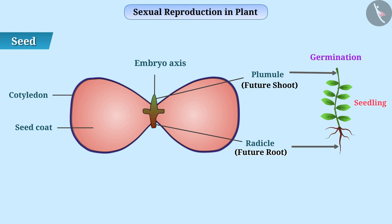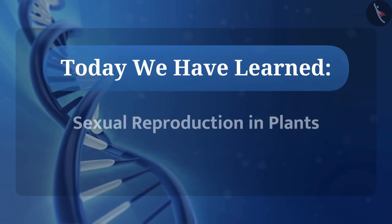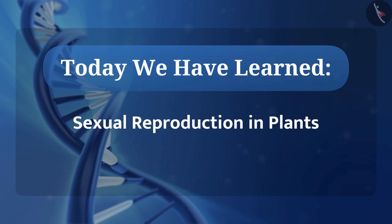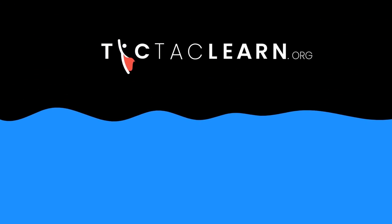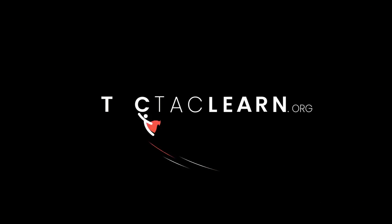So now you must have understood sexual reproduction in plants very well. For your homework, collect some flowers and try to draw their structures in your drawing book. Today we have learnt sexual reproduction in plants.